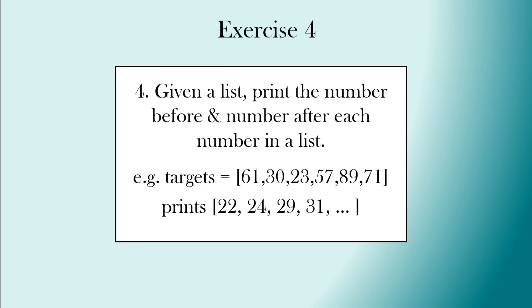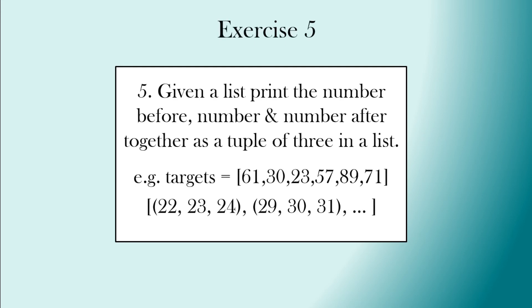Exercise four: given a list, print a number before and after each number in the list. Here we have the target list and it will print each number either side of the numbers that are in the target list. Exercise five: given a list, print the number before and the number after together as a tuple of three in the list. So we've got the number, the number before, and the number after together as three in a tuple, and we have those tuples in a list — printed using a list comprehension.